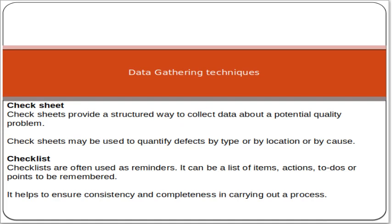The next technique is the check sheet. A check sheet provides a structured way to collect data about potential quality problems. Check sheets may be used to quantify defects by type, by location, or by cost. You can make an Excel sheet in which you mention the checkpoints and then simply check whether each item is okay or not.